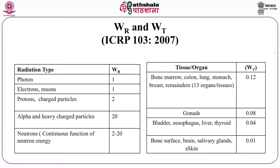For tissue weighing factors, ICRP assigns: bone marrow, colon, lung, stomach, and breast a factor of 0.12; gonads 0.08; bladder, esophagus, liver, and thyroid 0.04; and bone surface, brain, salivary glands, and skin 0.01. The range from bone marrow at 0.12 to skin at 0.01 reflects the relative sensitivity of these tissues to radiation-induced harm.